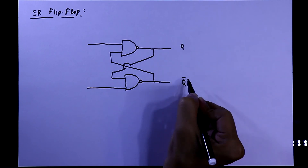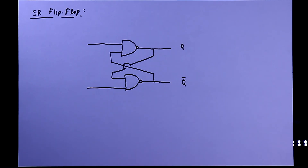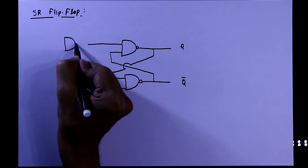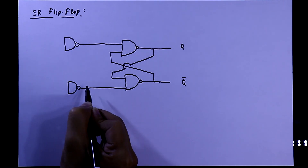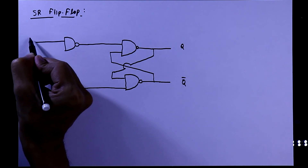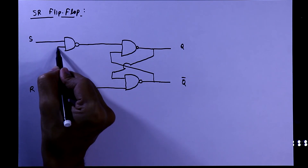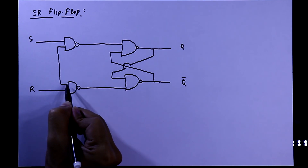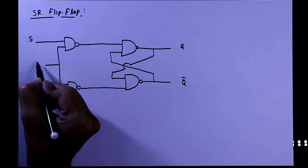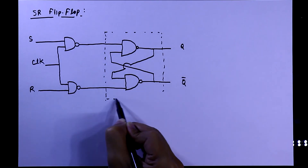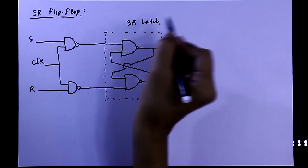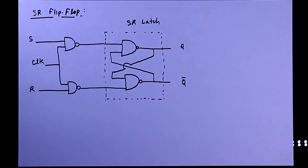Now we are drawing the SR latch. We want to make this as a flip flop. The difference between flip flop and latch is the latch doesn't have a clock pin, but a flip flop has a clock pin. To do this, we have to add two more NAND gates — this will be our S and this will be our R — and connect one input of both the NAND gates, which will be our clock pin.